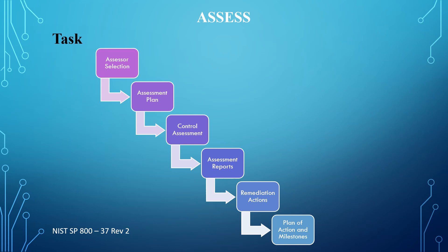Under the assessment plan task, the assessor develops, reviews, and approves plans to assess implemented controls. Once the security assessment plan is completed, the plan is reviewed and approved by the appropriate organization officials. The next task is the control assessment, where the assessor assesses the controls in accordance with the assessment procedures described in the assessment plans.